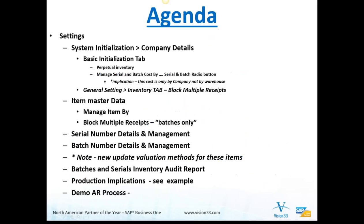With all of that in mind, I want to switch to our agenda today. We'll take a look at system initialization and company details and item master data, a little bit about management of serial numbers and batch numbers in the new system. The new update valuation methods for these items we're not going to go through today, but there are ways to update batch and serial items that are valued at that level in the system. We'll look at the specific type of audit report you can run for these new types of items, and we'll look at both production implications and do a demo of the AR process as it relates to these batch and serial number items managed from a cost perspective.